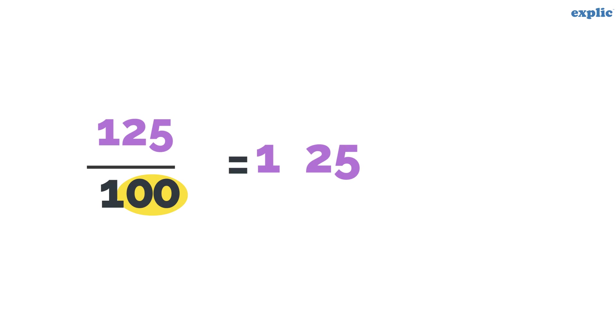Similarly, to convert 125 by 100 into a decimal, mark the decimal point after 2 places from the extreme right.